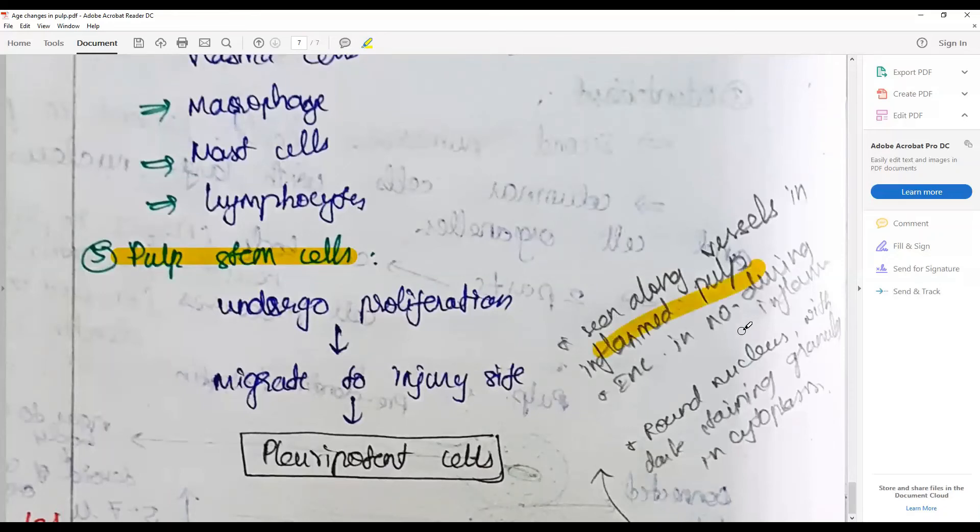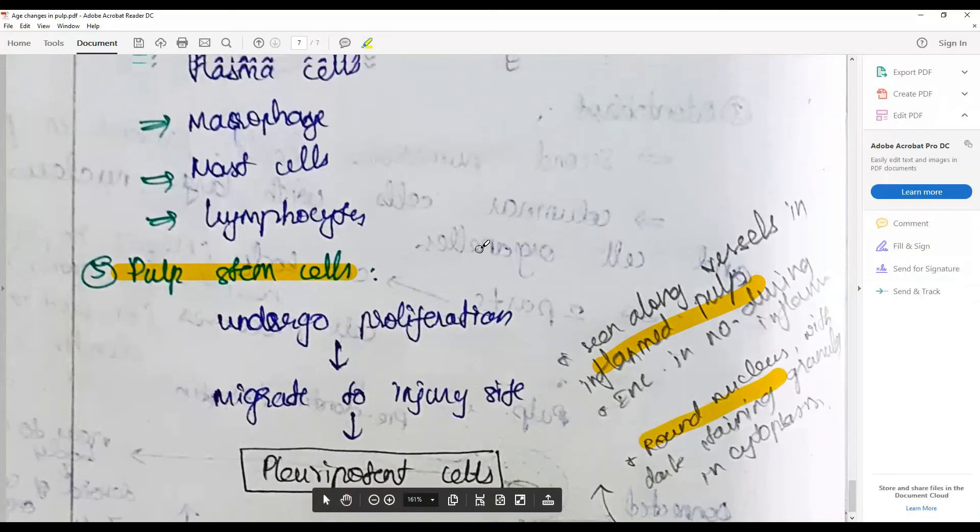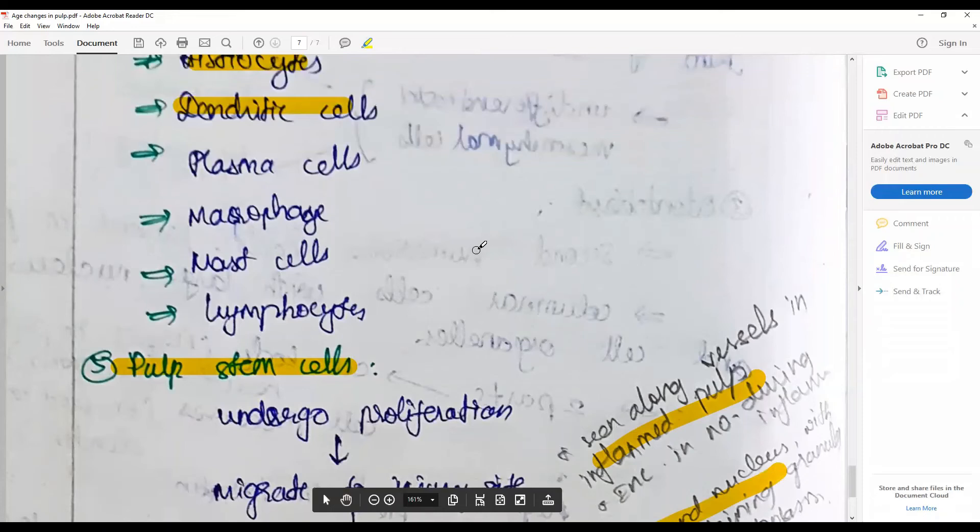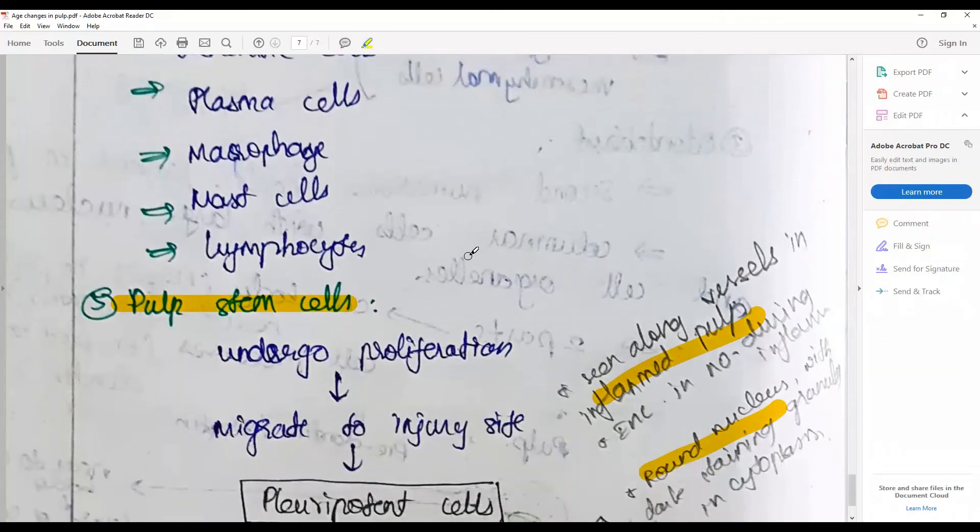They appear as round nucleus with dark-staining granular cytoplasm. Clinical significance is these cells can actively be used or harnessed to create tooth. Number two, they are a rich source of stem cells.